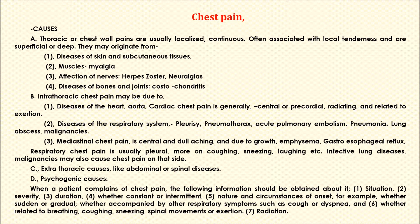D. Psychogenic causes. When a patient complains of chest pain, the following information should be obtained: 1. Situation; 2. Severity; 3. Duration; 4. Whether constant or intermittent; 5. Nature and circumstances of onset — for example, whether sudden or gradual, whether accompanied by other respiratory symptoms such as cough or dyspnea; 6. Whether related to breathing, coughing, sneezing, spinal movements or exertion; 7. Radiation.